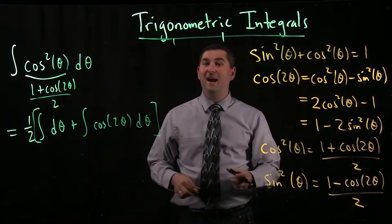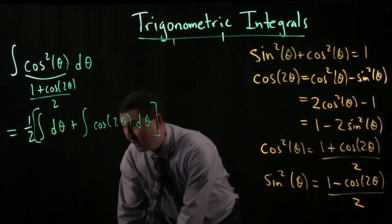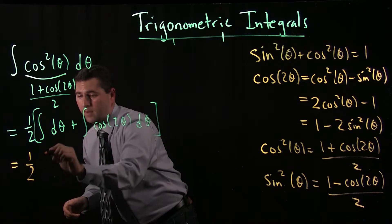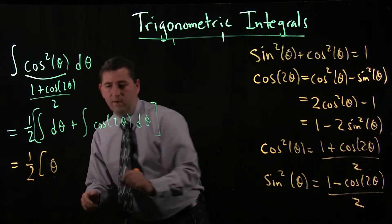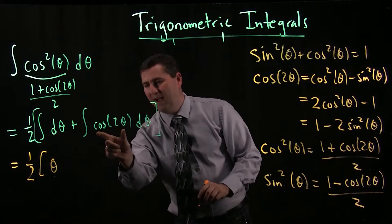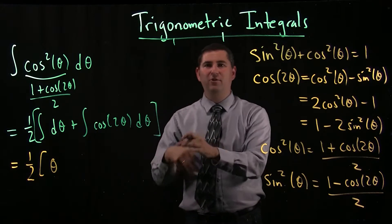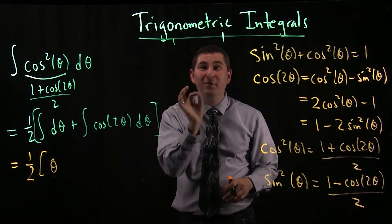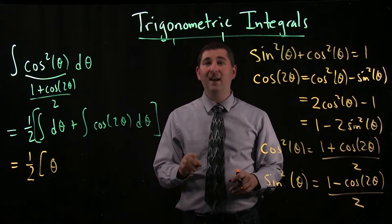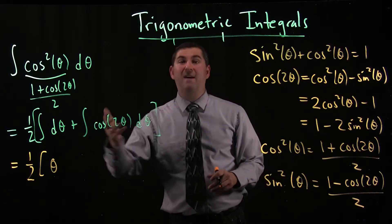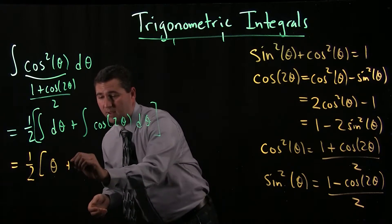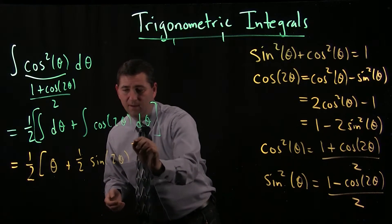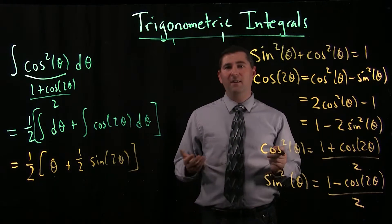I'm really happy about this because the first integral — that's just theta, no problem. For the second one, I'm integrating cosine, which should turn into a sine. There's a little two theta in there, so you do a quick u-substitution with u equals two theta, which gives you an extra half outside. So what I end up with is one half times sine of two theta.